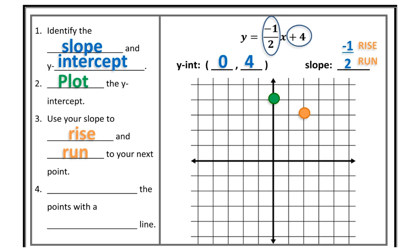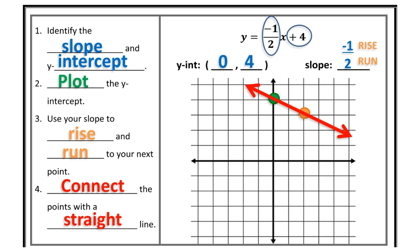Once I have my points, connect them with a straight line. All you need to graph a line is two points. However, if you wanted to find a third point, all you would do is rise negative 1 — go down 1 — and then run 2 to the right again.